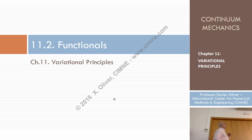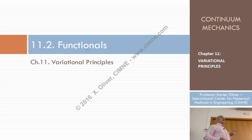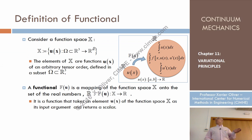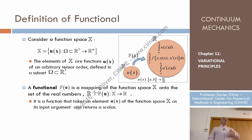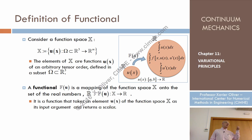Once again we need some auxiliary tools for understanding variational principles, which are the concept of functionals. You know what a function is: a function u that for every member of the original set, for instance interval [a,b], gets a member of the image set, which is in this case the reals. We know a function as a mapping that goes from a certain interval in 1D or from a certain original set in R^n to another set in R^m.